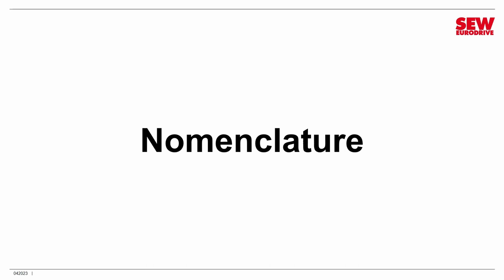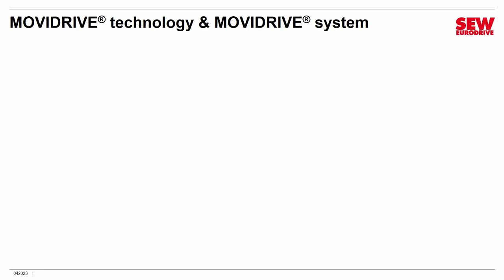Now we're going to talk about nomenclature — how to interpret all the codes on a sticker of an SEW product. Nomenclature can be really confusing because every company has its own unique way of describing its products using codes. I'll show you briefly how to interpret the stickers on some of the Movi-C control cabinet products — it's actually not too terrible, and our nomenclature for those products is fairly easy to understand.